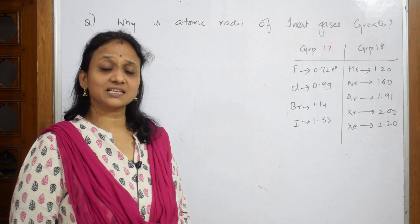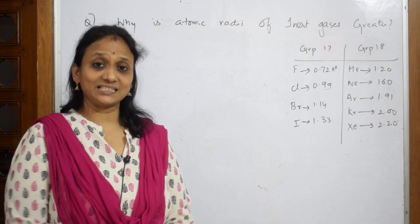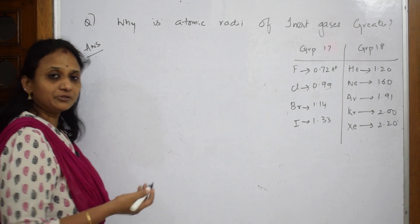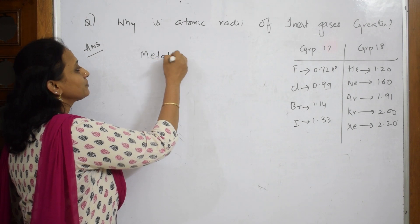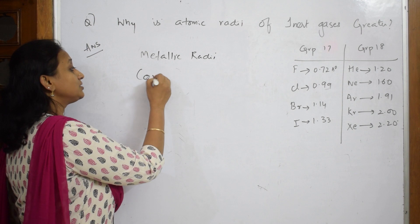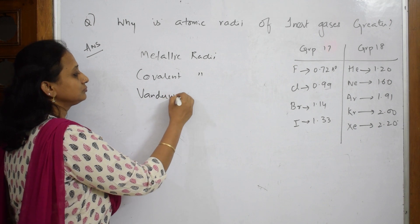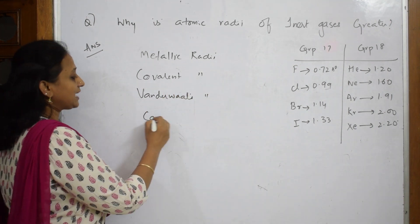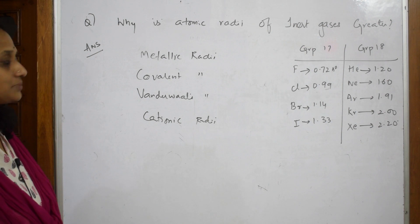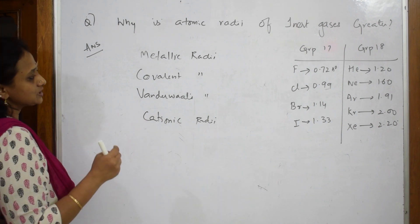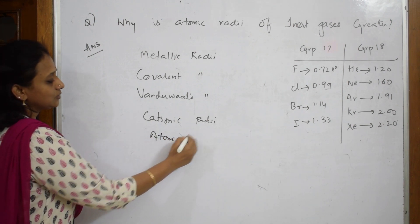Why is atomic radius greater? When we reason equations, we should have basic data. What types of radius have we studied? We have studied metallic radius, covalent radius, van der Waals radius, cationic radius - these are the different types of radius.